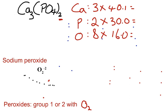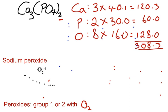So 3 times 40.1 is going to be 120.3. 2 times 30 is going to be 60. And 8 times 16 is 128. I'm going to add those guys up. So that should be 308.3 grams per mole for your calcium phosphate.